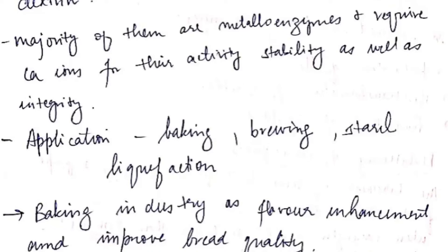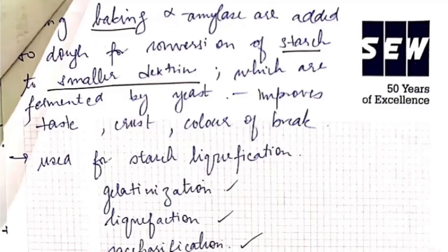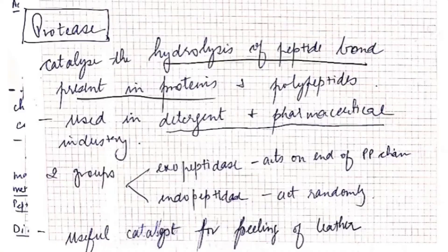Applications of amylase include its use in baking and brewing industry, starch liquefaction, and flavor enhancement, improving bread quality. During baking, alpha-amylase is added to dough for conversion of starch to smaller dextrins, which are fermented by yeast — this improves the taste and crust color of the bread. It is also used for starch liquefaction, that is gelatinization, liquefaction, and saccharification.